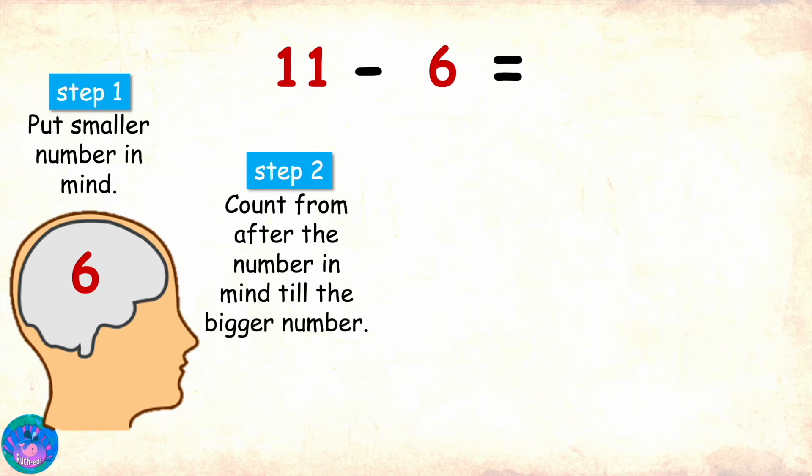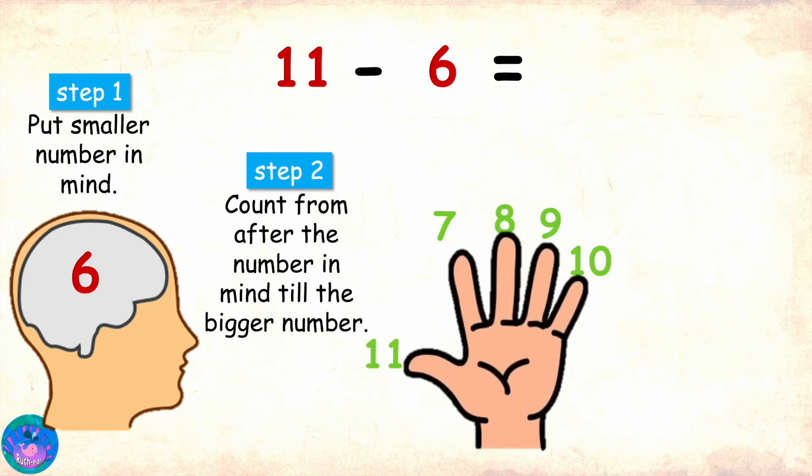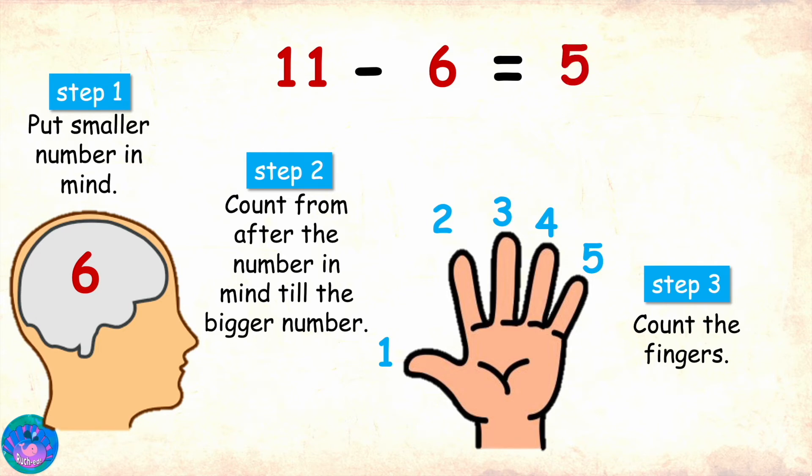Number in mind is 6, bigger number is 11, so 7, 8, 9, 10, 11. And step 3 is count the fingers that have been raised: 1, 2, 3, 4, 5. So 11 minus 6 should be equal to 5. Is that correct? Yes Sam, well done! Do you want to try one more?